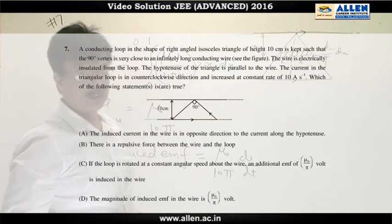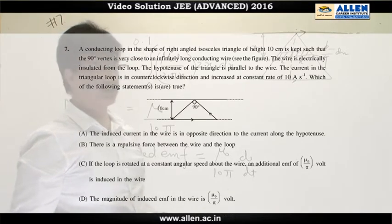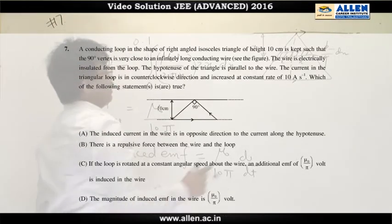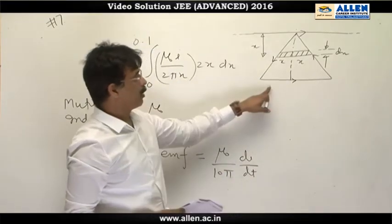Question 7. This question is based on the concept of mutual induction. There is a long wire and a triangular coil.